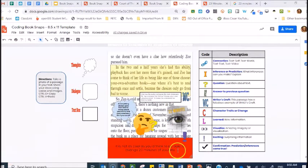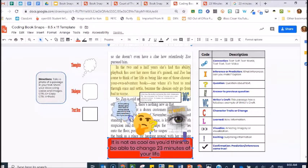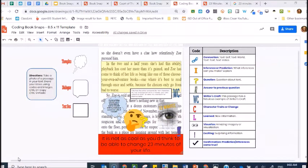If you wish to change the size of your text in any of these text box, dialog, or thought bubble, simply highlight the text and make it bigger. A good book snap has at least three codes that are clearly explained. In this example, I used writer's craft, question, and exciting.